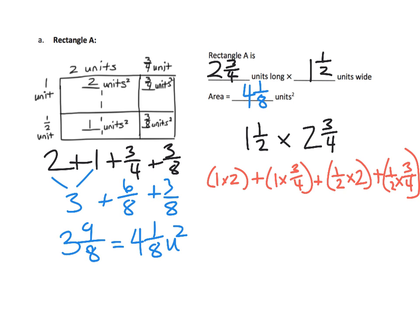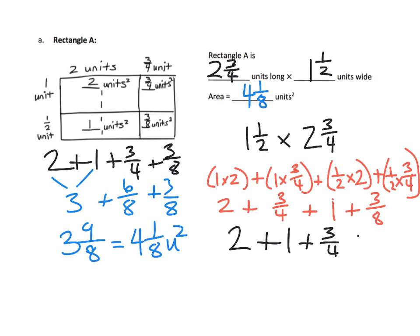That's why these are called partial products. One times two is two, one times three-fourths is three-fourths, one-half times two is two-over-two which is one, and one-half times three-fourths is three-eighths. Adding them together using commutative property: two plus one plus three-fourths plus three-eighths gives the same result as the geometry — four and one-eighth.